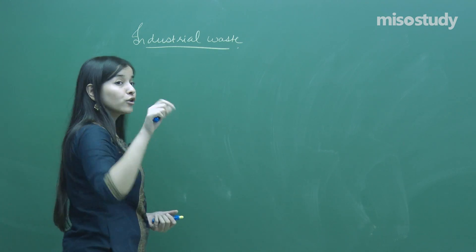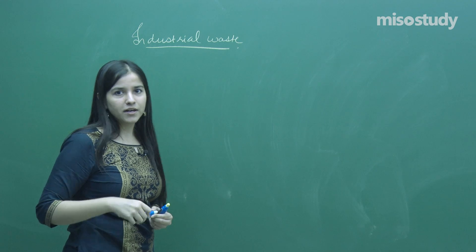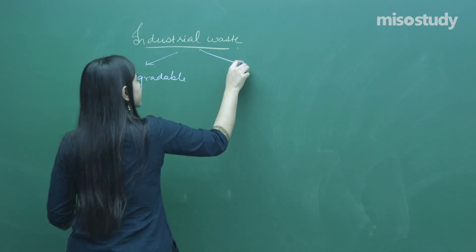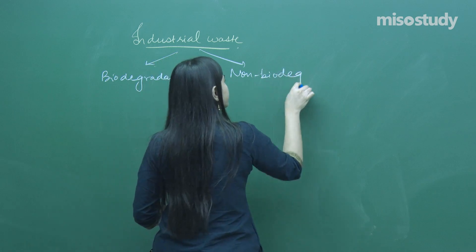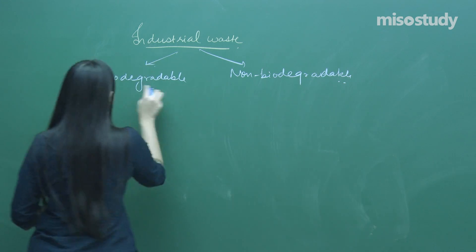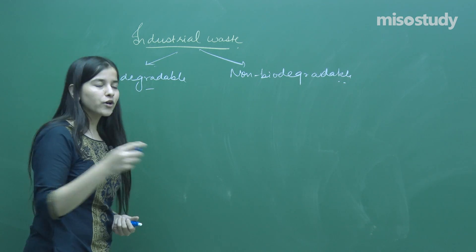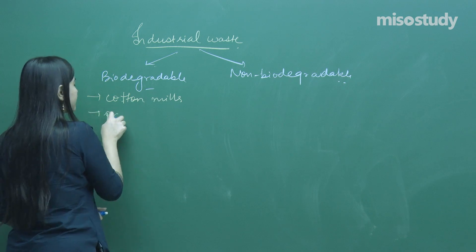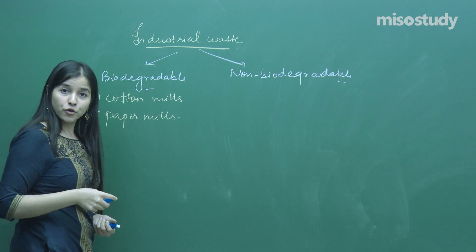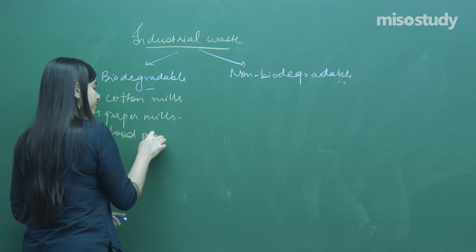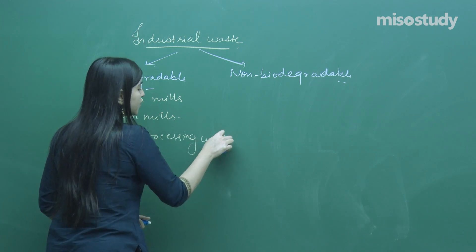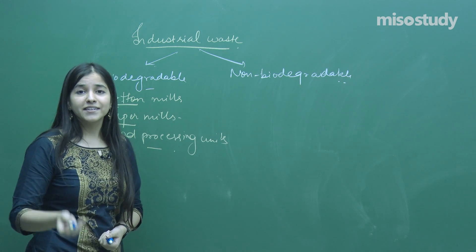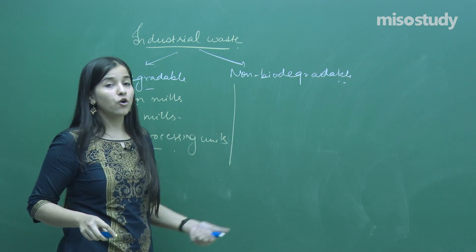Industrial waste is of two types: biodegradable and non-biodegradable. Industries producing biodegradable waste include cotton mills, paper mills, and food processing units. These materials are directly obtained from the environment. Then come the non-biodegradable industries.